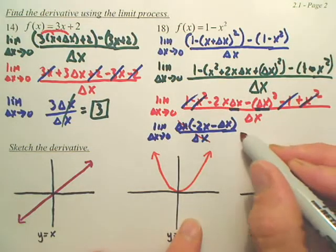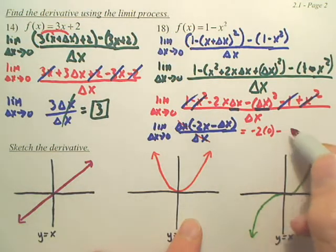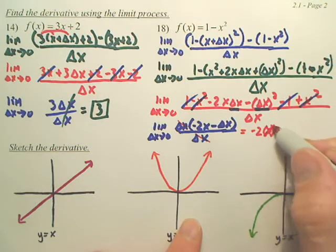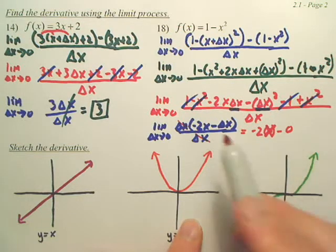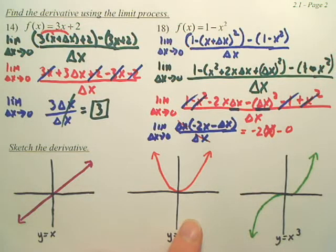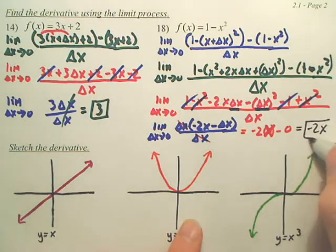Now, when I plug in 0 for delta x, doesn't that give me negative 2 times x? When I plug in 0 for delta x, doesn't that get negative 2x minus 0? My answer is negative 2x.